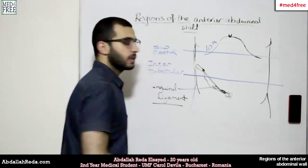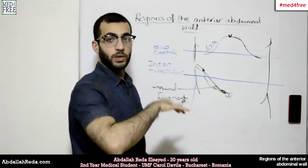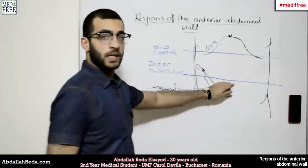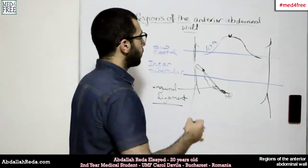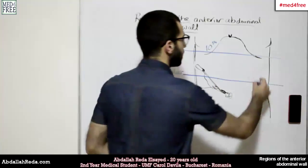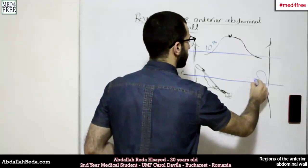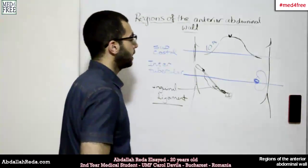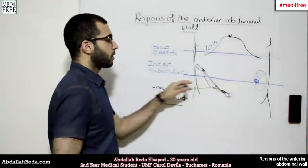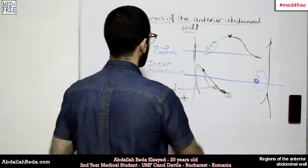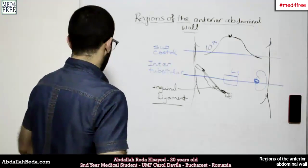At the same time, this line is also called the transpyloric line. Whenever we hear 'pyloric,' we know it is related to the pylorus of the stomach. Transpyloric means it passes through the pylorus of the stomach, the fundus of the gallbladder, the beginning of the duodenum, the hilum of each kidney, and the neck and body of the pancreas. This line also passes through the L1 vertebra.